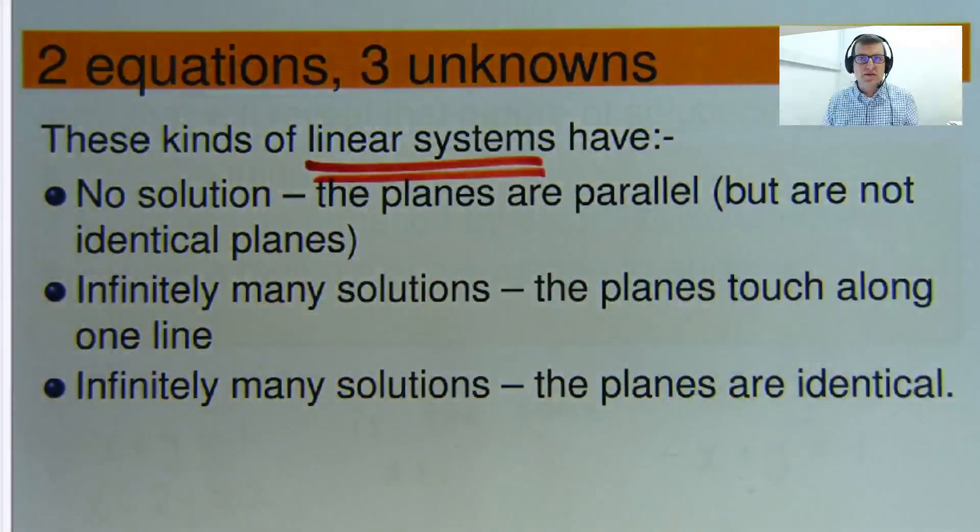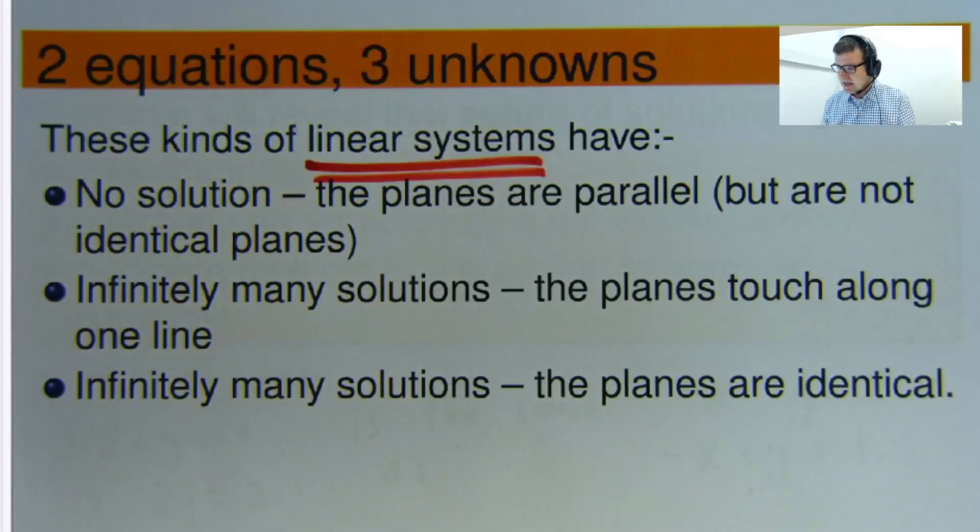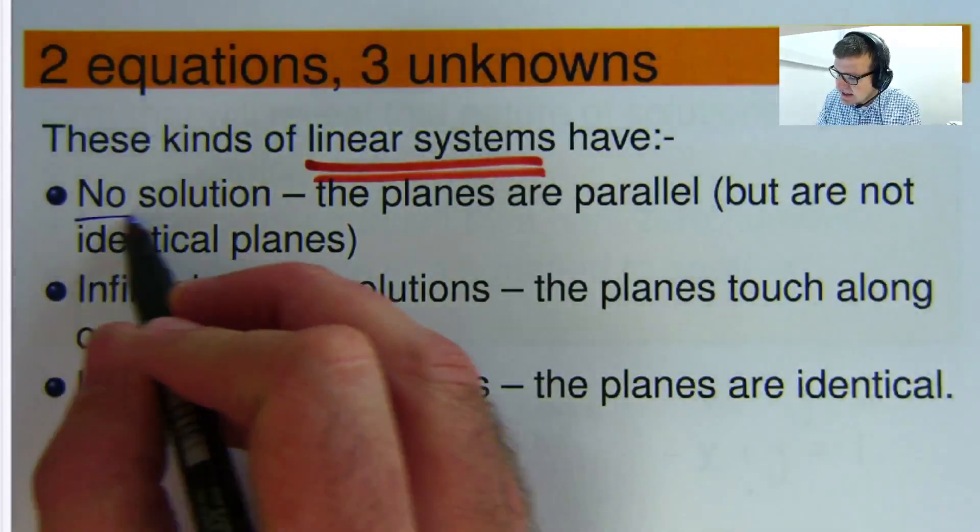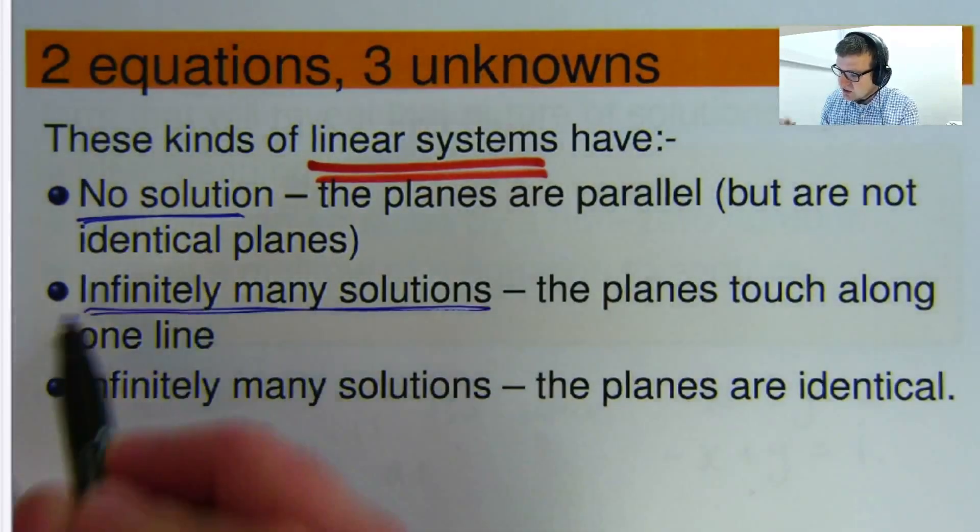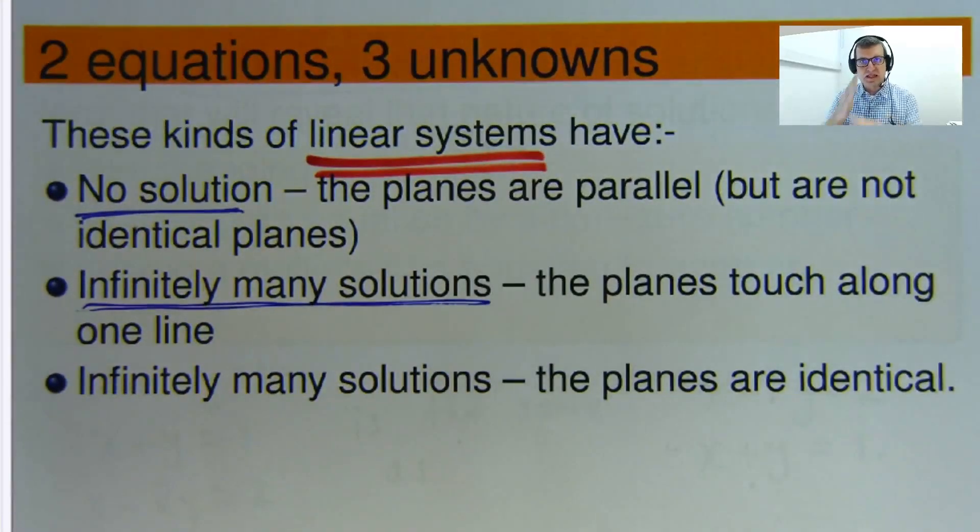I'll show you some examples of linear systems of this type in a minute. But let's think about what the outcome of the solution space can be. The first situation is that there's no solutions to this problem. So that just means, geometrically, there's two planes, and they're parallel, and they never touch. The second situation is that there are infinitely many solutions. So, the two planes touch, but along one line, and there's an infinite number of points on a line.